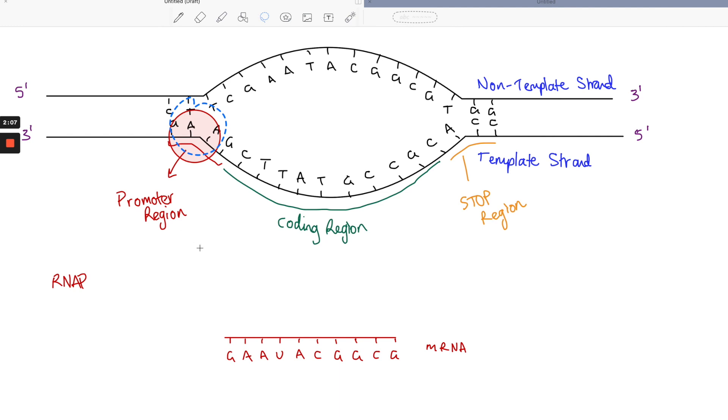It'll run along from 3 to 5, reading the template strand and laying down complementary base pairs. The promoter region won't actually get coded - it'll bind here but start moving this way. When it gets to this region, it'll see a C and lay down a complementary G RNA nucleotide, then it hits a T so it puts down an A, and it hits a T again.